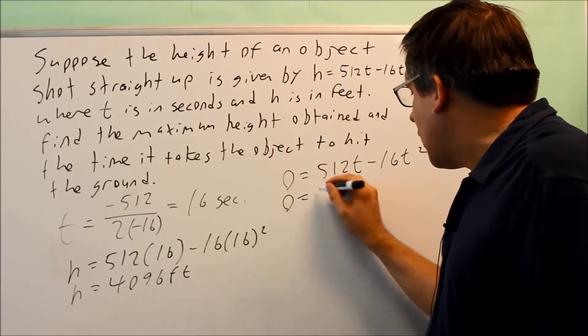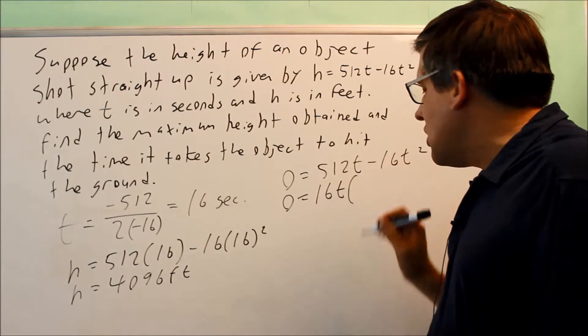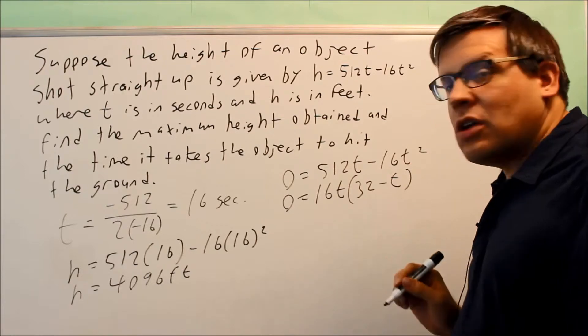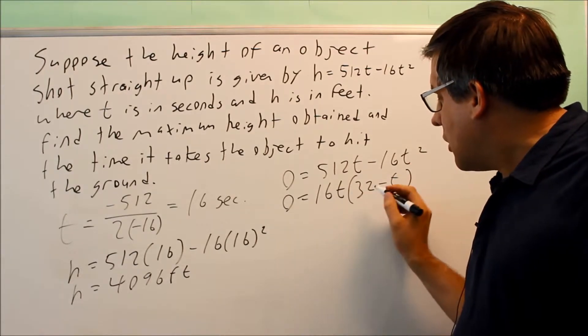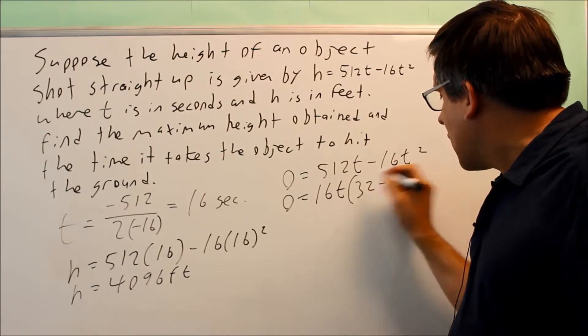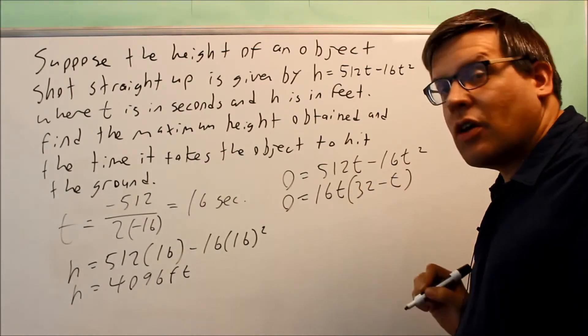What I want to do is factor out a 16t from that, and that's going to give me 32 minus t left over on the inside. 512t divided by 16 will give you 32, and then we take out 16 here and leave you with 1t left over.